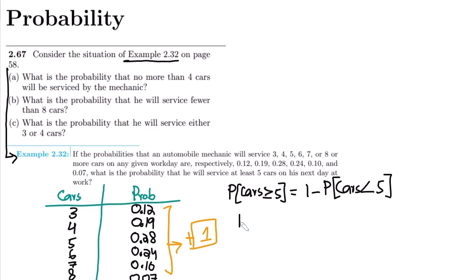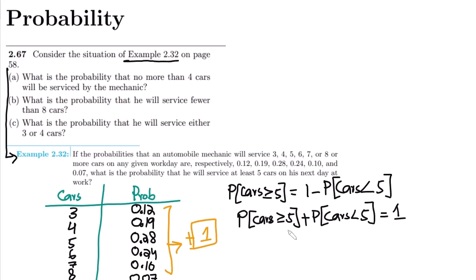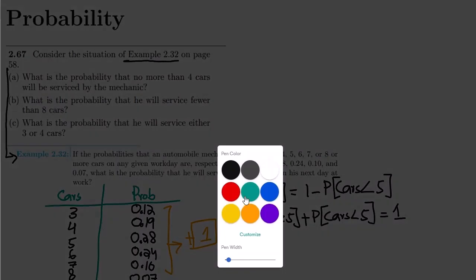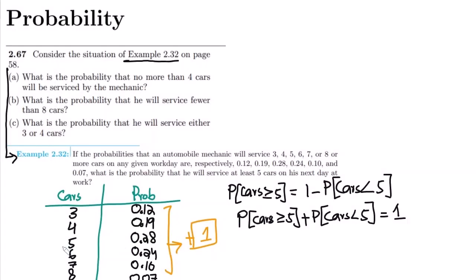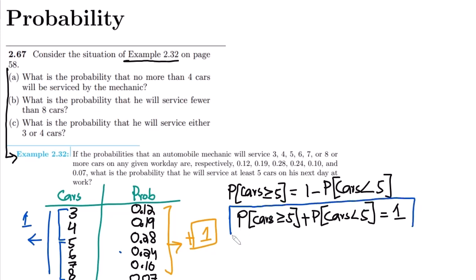The probability of cars ≥ 5 plus the probability of cars < 5 will always sum to 1, because this covers the entire scenario. Cars greater than or equal to 5 are on one side, while cars less than 5 are on the other — together they represent the complete range, which has been graphically illustrated here.